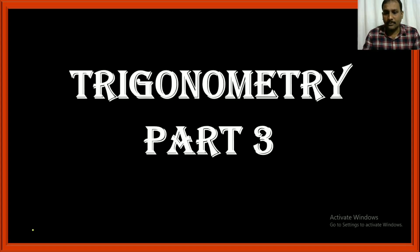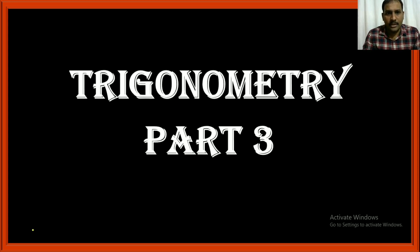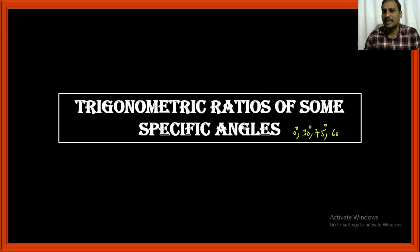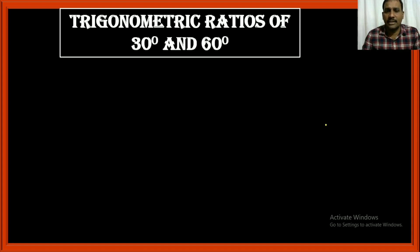Trigonometry part 3. Before watching this video, make sure that you have watched parts 1 and 2. In this session we are going to discuss the trigonometric ratios of some specific angles: 0 degrees, 30 degrees, 45 degrees, 60, and 90 degrees. First we will go with 30 degrees and 60 degrees.